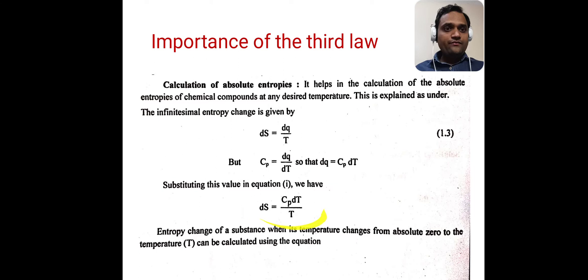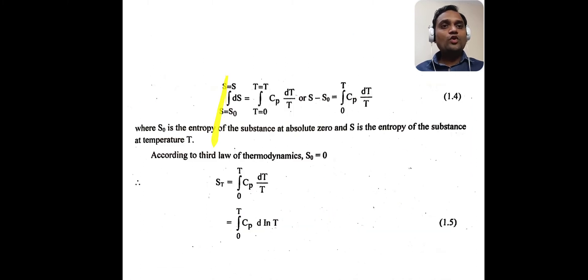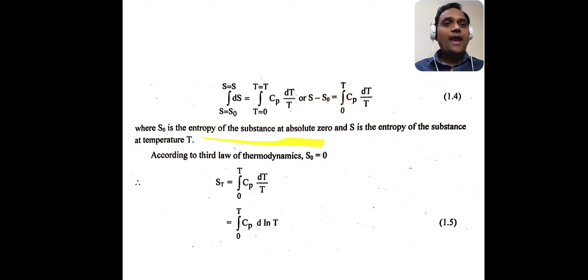We now have dS = Cp dT / T. Integrating this equation between limits — entropy from S₀ to S, and temperature from 0 to T — we get S − S₀ = ∫₀ᵀ Cp dT / T, where S₀ is the entropy of the substance at absolute zero and S is the entropy at temperature T.